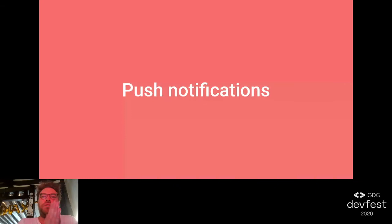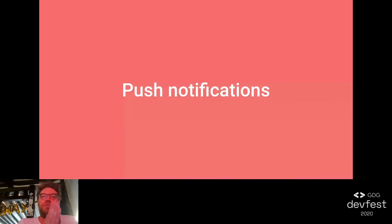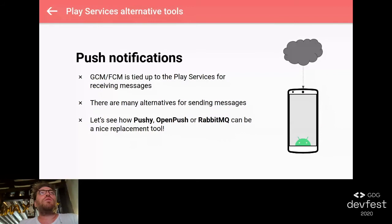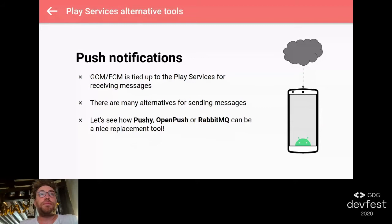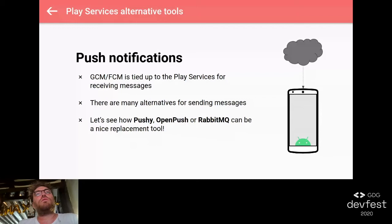Now let's see how we can send push notifications without using FCM. Sending push notifications, you usually go for the GCM or the FCM library, which is very tailored to play services for receiving server push on the device. But there are some alternative ways to send messaging to your phone. I took three samples here: Pushy, which is a nice alternative tool very similar to FCM; Open Push, which is an open source tooling for sending push messages; and RabbitMQ, which is a tool we use at my current company.